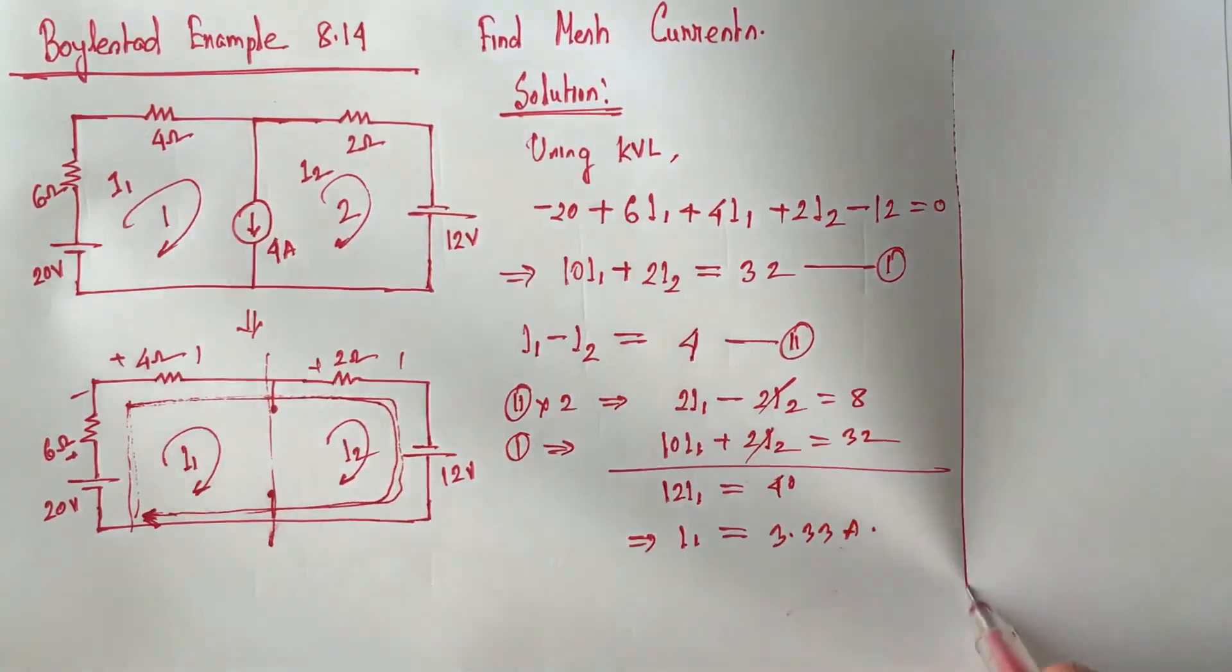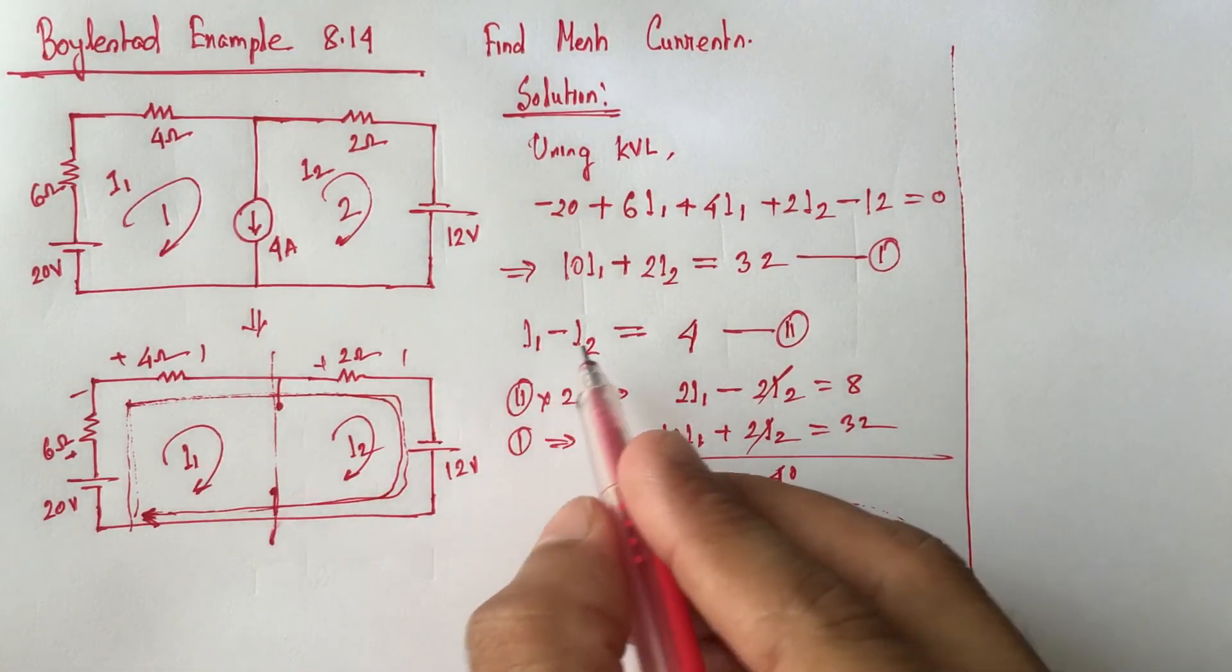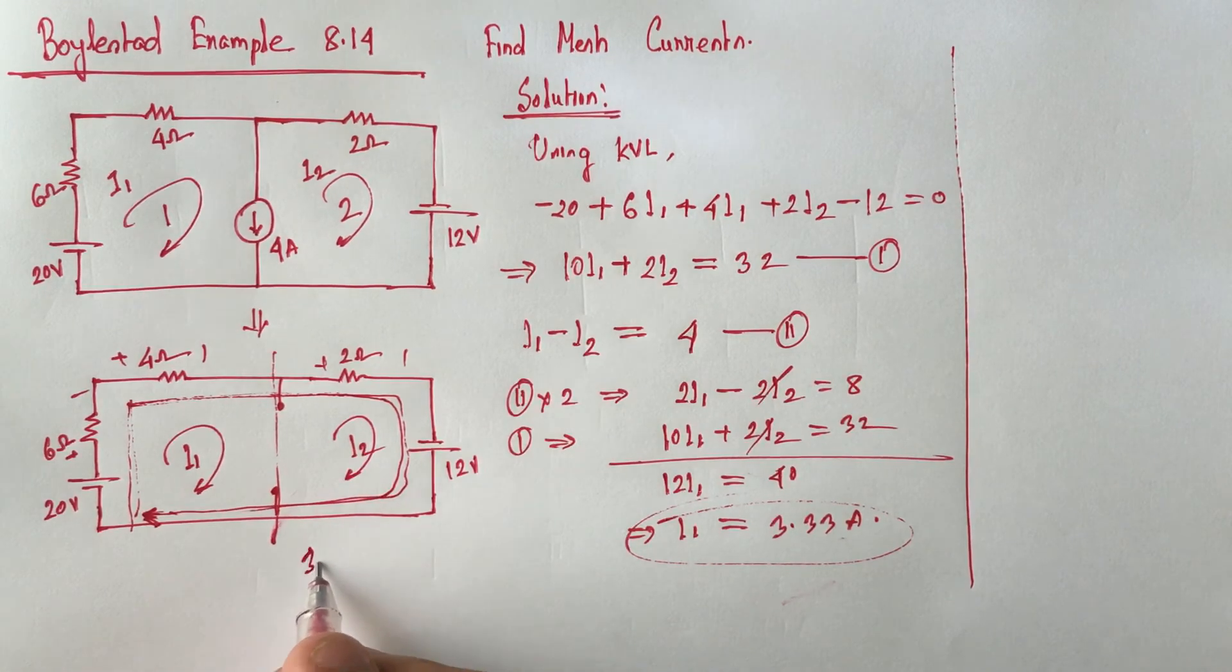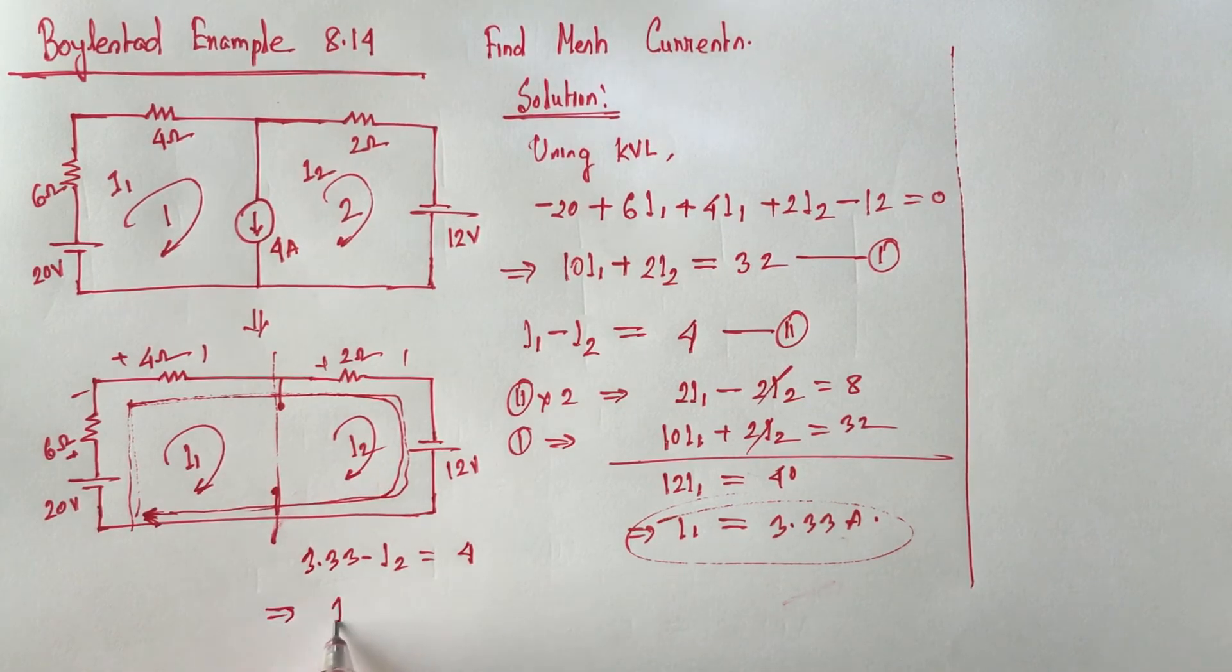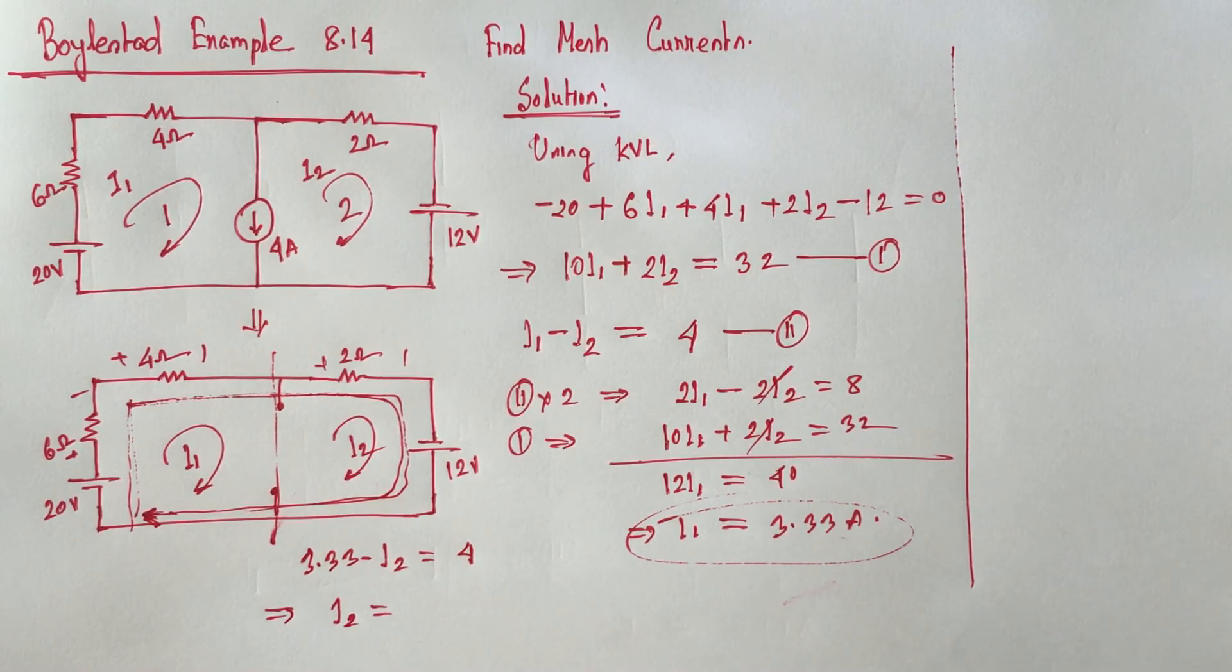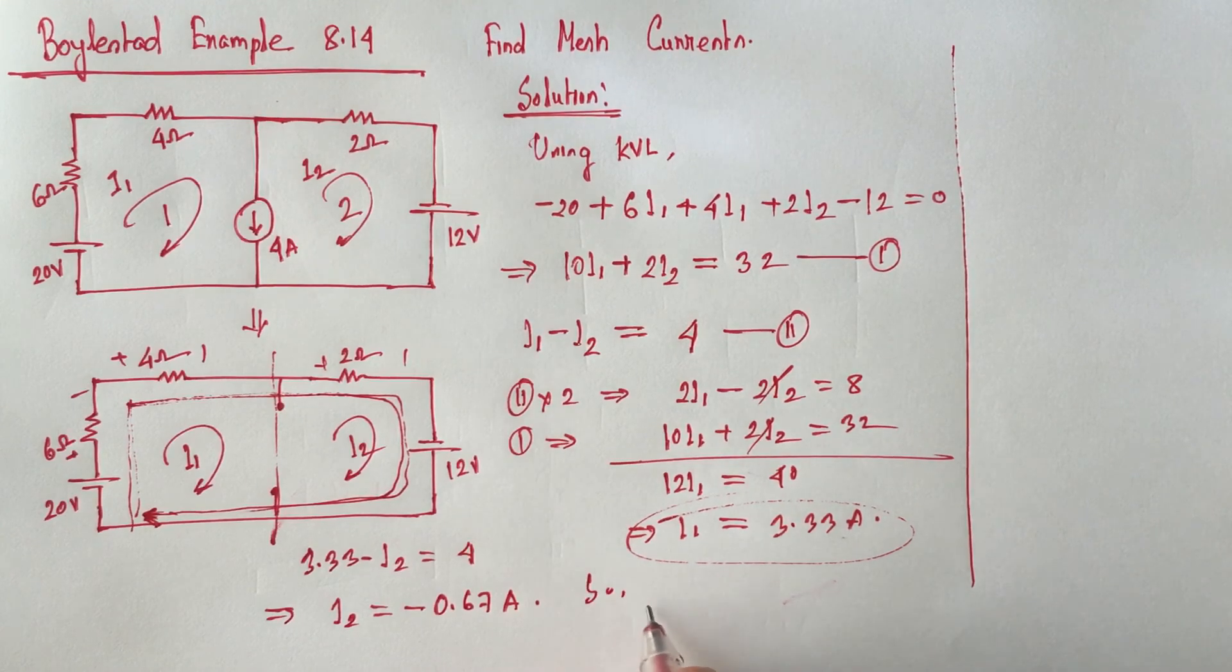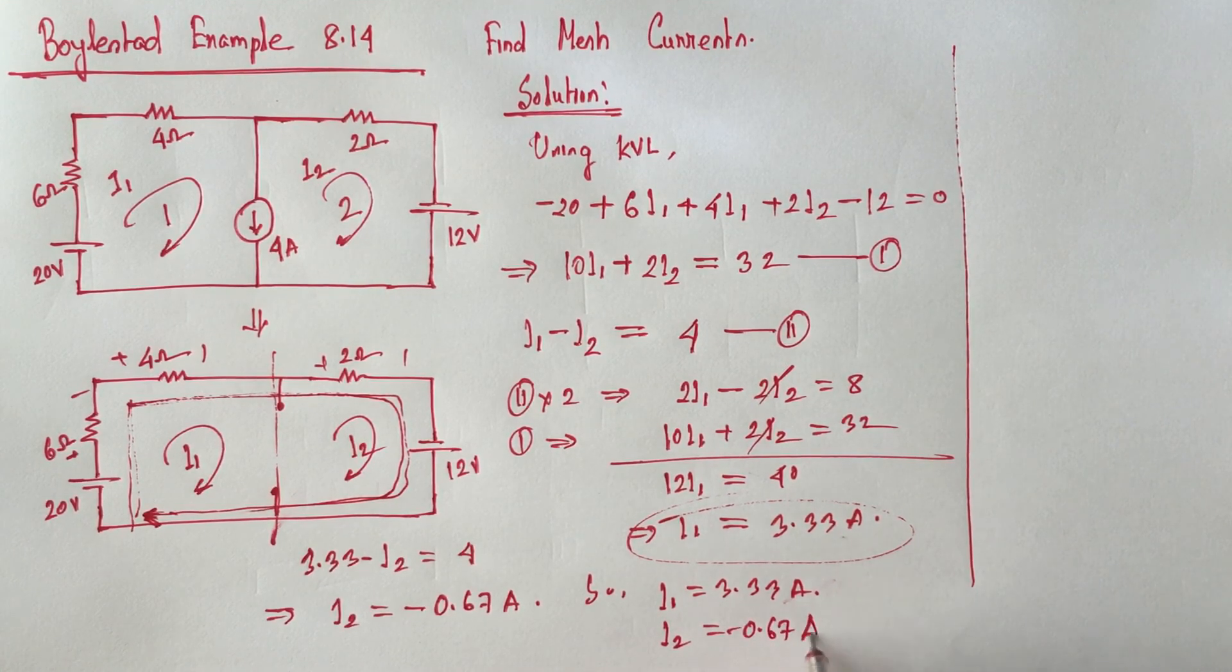If we put the value of i1 into equation 2, we will get 3.33 minus i2 equals 4. That is, i2 equals minus 0.67 ampere. So we get i1 equals 3.33 ampere and i2 equals minus 0.67 ampere.